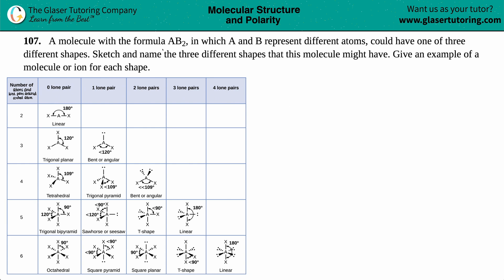Number 107, a molecule with the formula AB2 in which A and B represent different atoms could have one of three different shapes. Sketch and name the three different shapes that this molecule might have and give an example of a molecule or an ion for each shape. Okay, so we basically just have to come up with three different shapes that all come back to AB2. Not too bad with our handy-dandy molecular geometry chart going on over here.